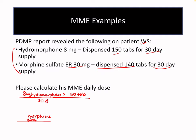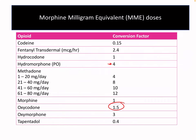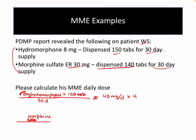This gives us the total daily dose over the 30-day period. For hydromorphone: 8 milligrams times 150 tabs divided by 30 equals 40 milligrams per day. Multiplying that by the conversion factor of 4 gives us 160 morphine milliequivalents for the hydromorphone.